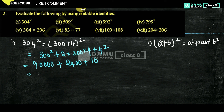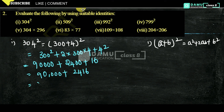Then you add all these things: 90,000 plus 2,400 plus 16 gives 92,416. So 92,416 is the answer for 304².